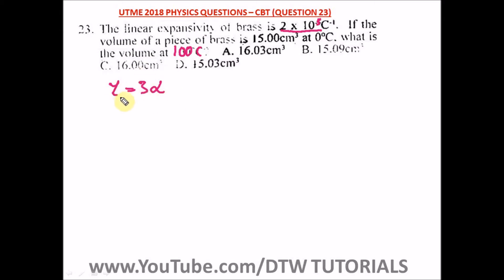Volume expansivity is three times that of linear expansivity. What's the formula for finding volume expansivity? It is γ = (V₂ - V₁)/(V₁θ), where V₂ is the final volume, V₁ is the initial volume, and θ is your temperature.